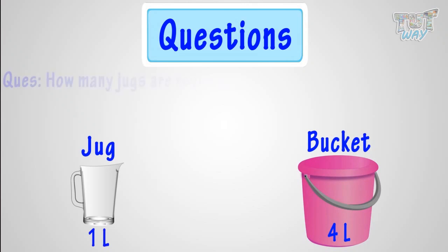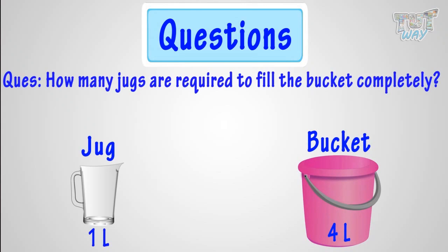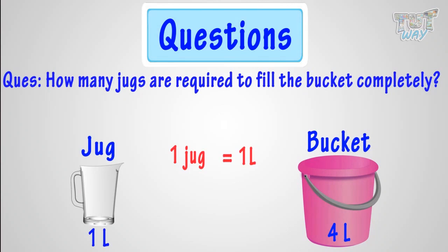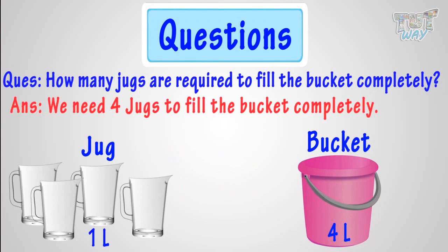Then, how many jugs are required to fill the bucket completely? One jug will contain 1 liter of water. So, 4 jugs will make 4 liters of water. So, we need 4 jugs of water to completely fill the bucket. Let's move on to the next question.